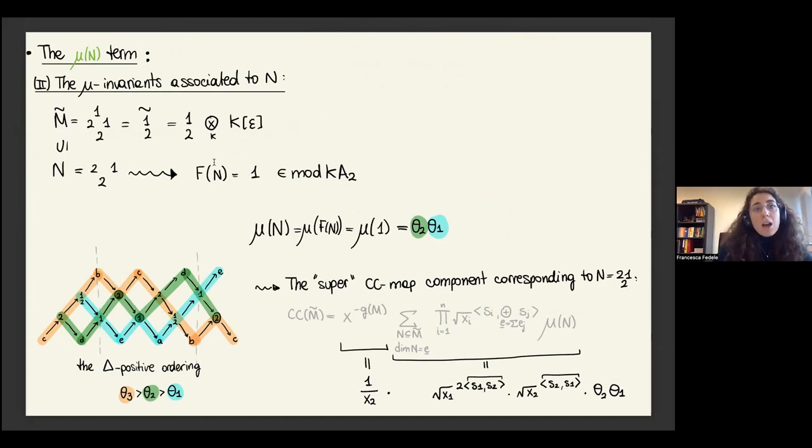If you look at a specific induced module, for example the induced one from one-two, and then you look at each one of these submodules, for example this N, there is a way of associating a KA2 module to this module over this other algebra. If N is already a module over K2, then this is just associating itself to it. If N is an induced module, F of N is zero. But for this one it's S1, the simple one. As I was saying, each object appears in two of these colored paths in this AR quiver. In this case, one appears in the blue and the green one. So we pick theta two and theta one which are the corresponding mu invariants, and we multiply them in the positive order. So mu of N in this case is theta two theta one. This works for any submodule.